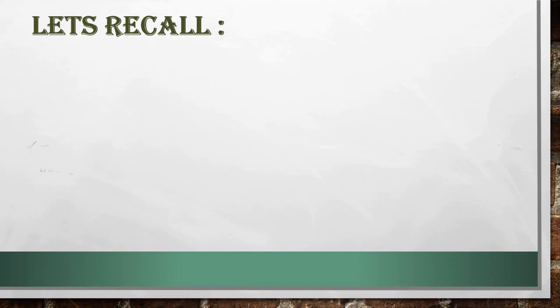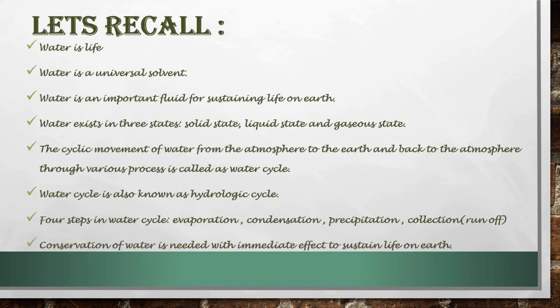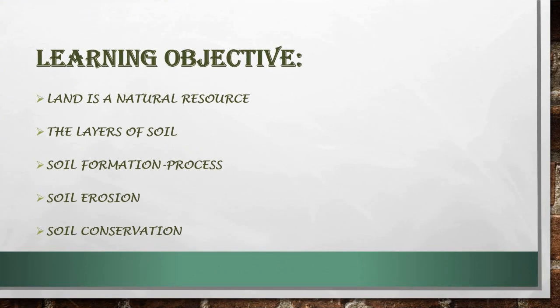Before beginning with this module, let us recall what we studied in Module 2. Water is life — we cannot live without water. Water is a universal solvent and an important fluid for sustaining life on earth. Water exists in three states: solid, liquid, and gaseous. The cyclic movement of water from the atmosphere to the earth and back is called the water cycle, also known as the hydrologic cycle. The four steps are evaporation, condensation, precipitation, collection, and runoff. Conservation of water is needed with immediate effect to sustain life on earth.